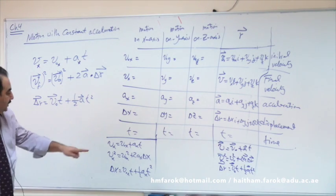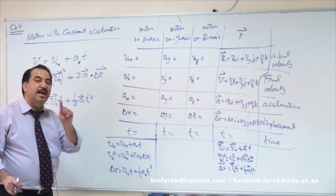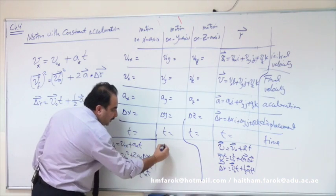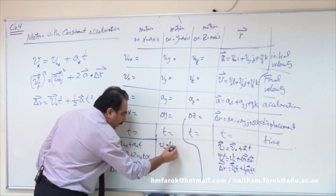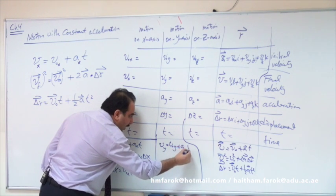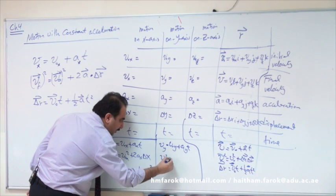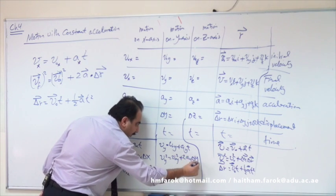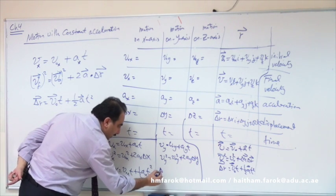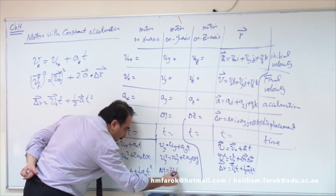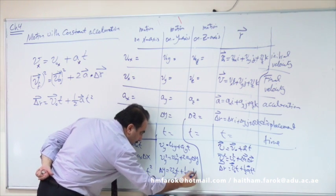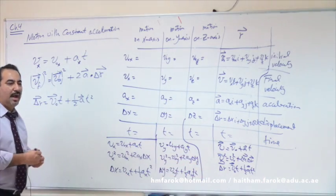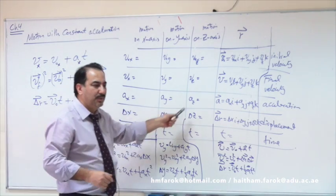For column y, same equations but change x to y: Vy = V₀y + ay·t; Vy² = V₀y² + 2ay·Δy; Δy = V₀y·t + ½ay·t². No need to repeat for z — same pattern. Most of the time questions are in two dimensions, so you don't need z.